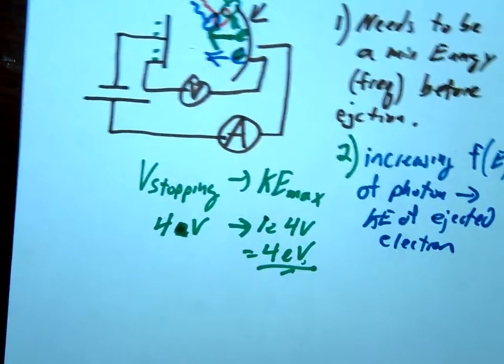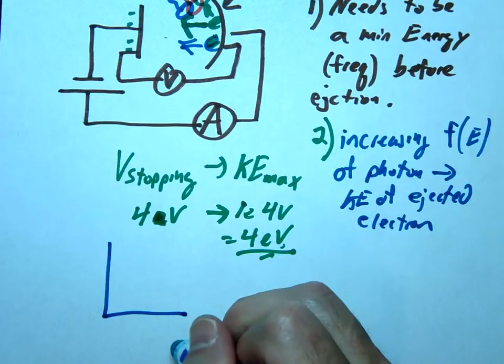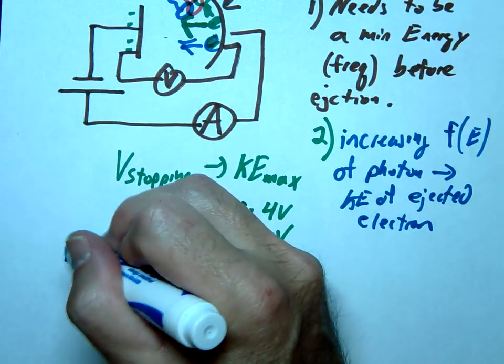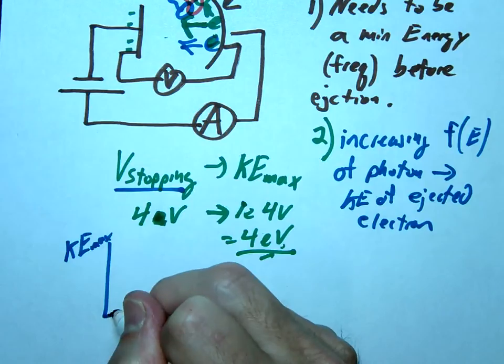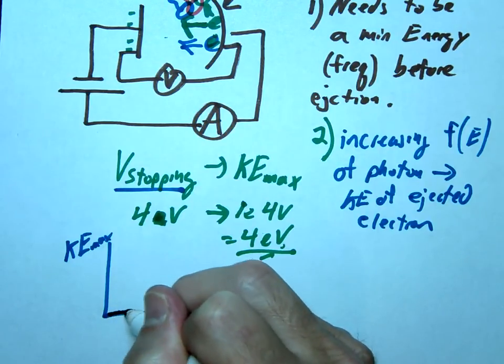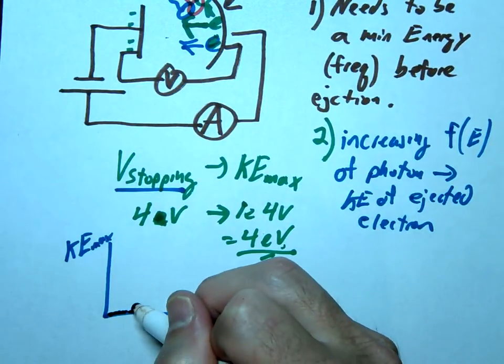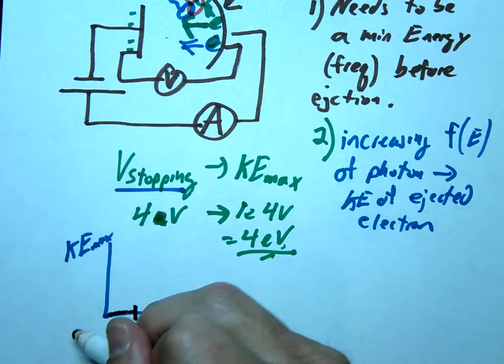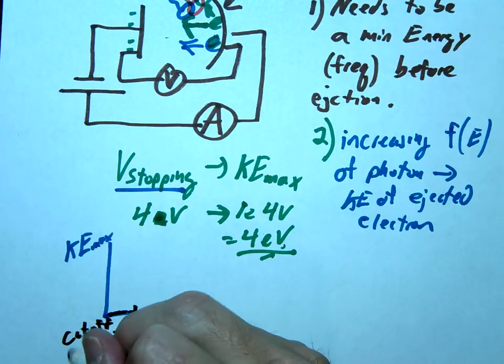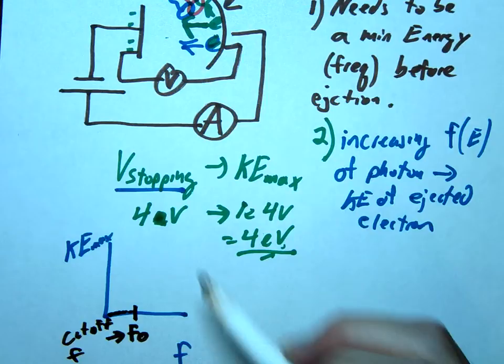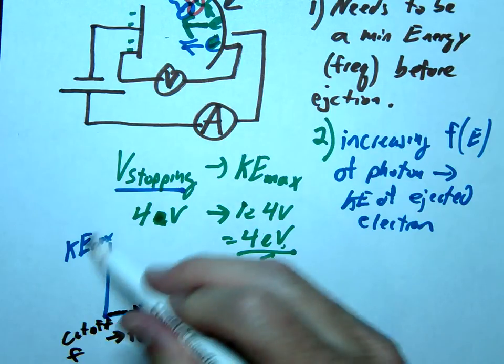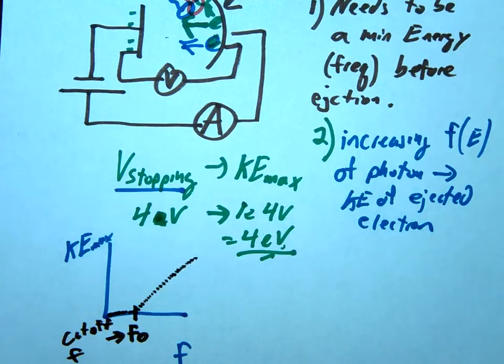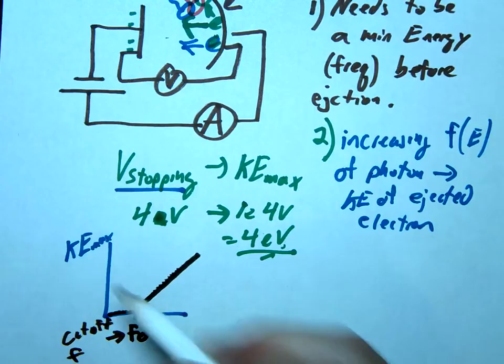Now as it turns out, we can make a nice graph of this. On this side we could put frequency, on this side we could put kinetic energy max. Again, we'll measure this using our stopping potential. If we were to go ahead and graph this out, what we would see is for certain frequencies, nothing's going to happen. You're going to get no ejection. So it would be 0, 0, 0. And then, all of a sudden, you're going to reach that minimum frequency. We call that F0, or the cutoff frequency, or threshold frequency. So once it hits that, all of a sudden, you're going to have some kinetic energy. And as you keep increasing that frequency, the kinetic energy that's going to be ejected is also going to increase. And you'd end up with a nice linear graph here as you eject the electrons.